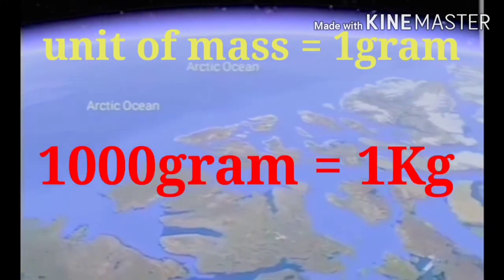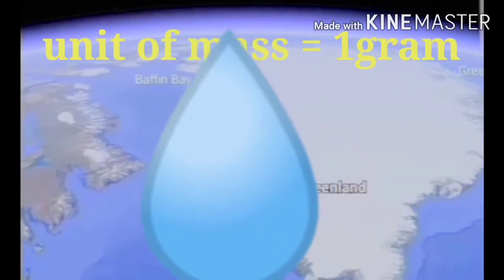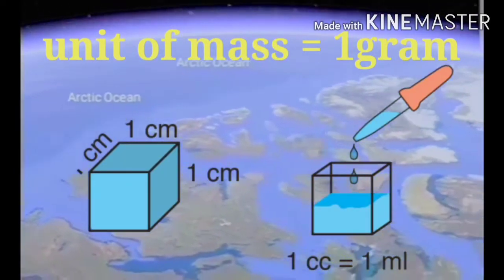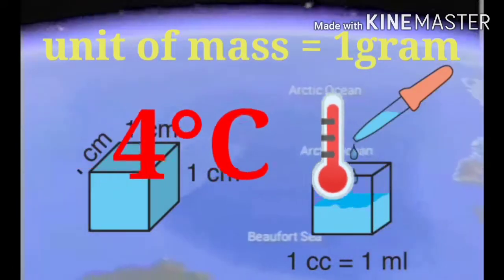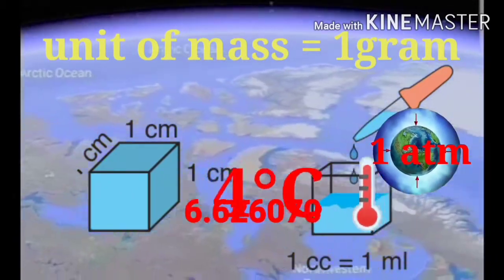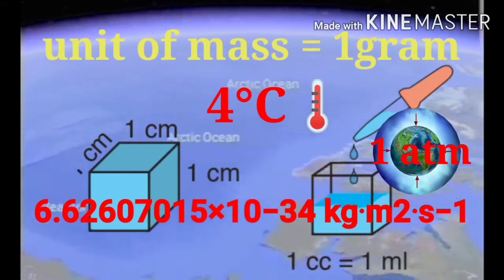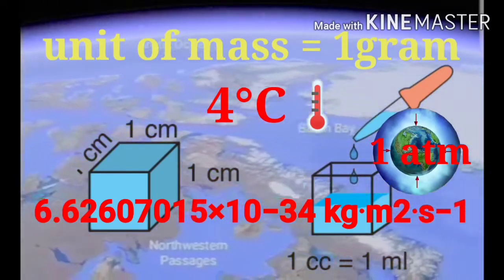Now let's talk about the gram. You will be well acquainted with grams and kilograms. It is used for water. A mass of 100% pure water with a volume equal to 1 cubic centimeter at a temperature of 4 degrees Celsius and one atmospheric pressure is called 1 gram. The value 6.62607015 times 10 to the minus 34 kilograms per meter squared per second of Planck constant is also fixed.